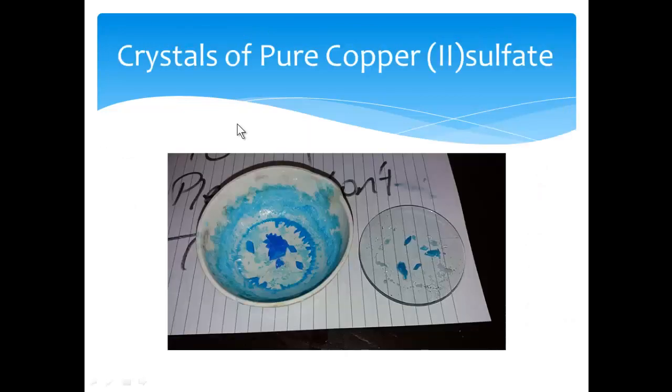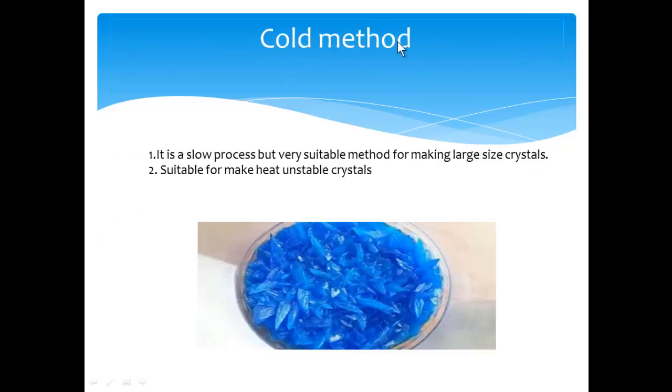In this picture, you can see the crystals of pure copper sulfate. Cold method: it is a slow process, but very suitable method for making large size crystals. Second point is that it's suitable for making heat unstable crystals.